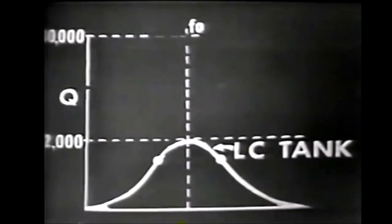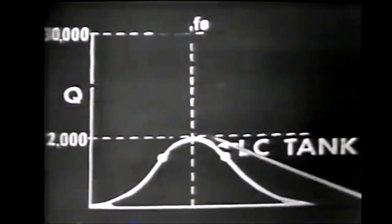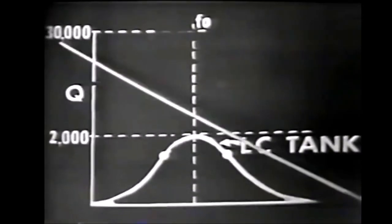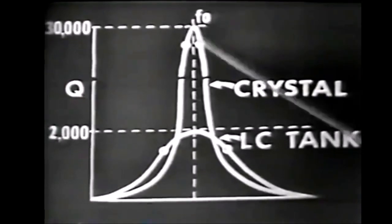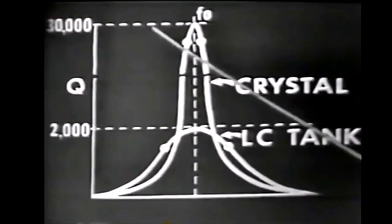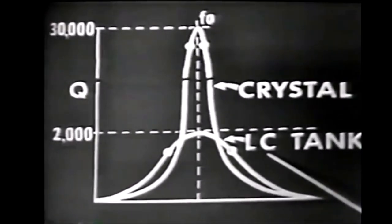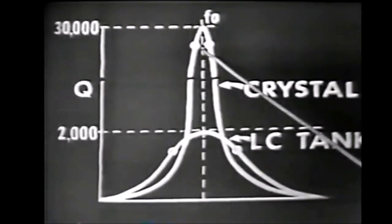Let's compare the Q of a crystal to an ordinary LC tank circuit. The Q of an LC tank circuit is seldom greater than 2,000, whereas the Q of a crystal is sometimes as great as 30,000. Because of this high Q, the crystal would have much better frequency stability.